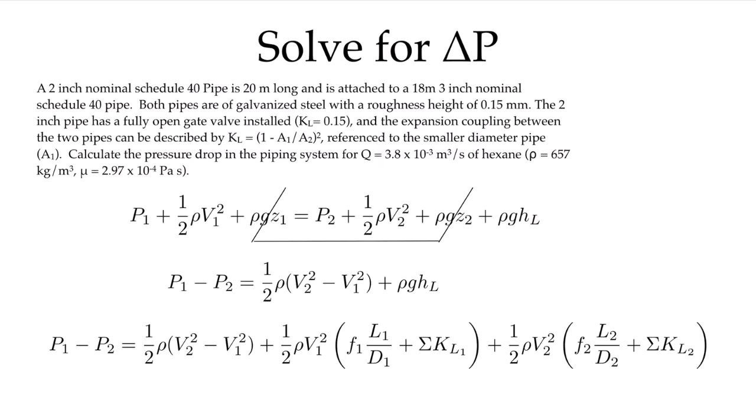Here's the problem we're going to look at. We're going to start with a 2-inch nominal schedule 40 pipe, which is 20 meters long, and it's attached to an 18-meter 3-inch nominal schedule 40 pipe. Both pipes are of galvanized steel, and the roughness height for galvanized steel is 0.15 millimeters. The 2-inch pipe has a fully open gate valve installed with a loss coefficient of 0.15. The expansion coupling, which is used to join the 2-inch and 3-inch pipes, can be described with the loss coefficient given by 1 minus A1 over A2 squared, referenced to the smaller pipe diameter. Calculate the pressure drop in the piping system for a flow rate of 3.8 times 10 to the minus 3 cubic meters per second. We're using hexane with density of 657 kg/m³ and viscosity of 2.97 times 10 to the minus 4 Pascal seconds.